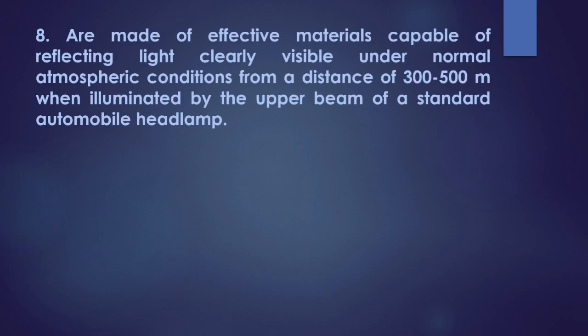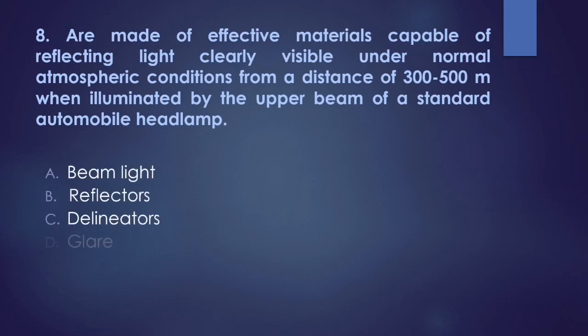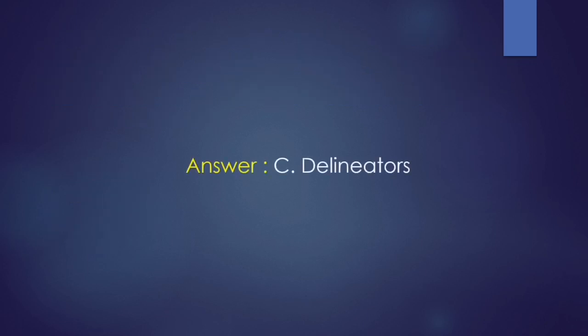Number 8: are made of effective materials capable of reflecting light, clearly visible under normal atmospheric conditions from a distance of 300 to 500 meters when illuminated by the upper beam of a standard automobile headlamp. A. beam light, B. reflectors, C. delineators, and D. glare. I think lumabas na rin to pero iba lang yung meaning. The answer is letter C. delineators.